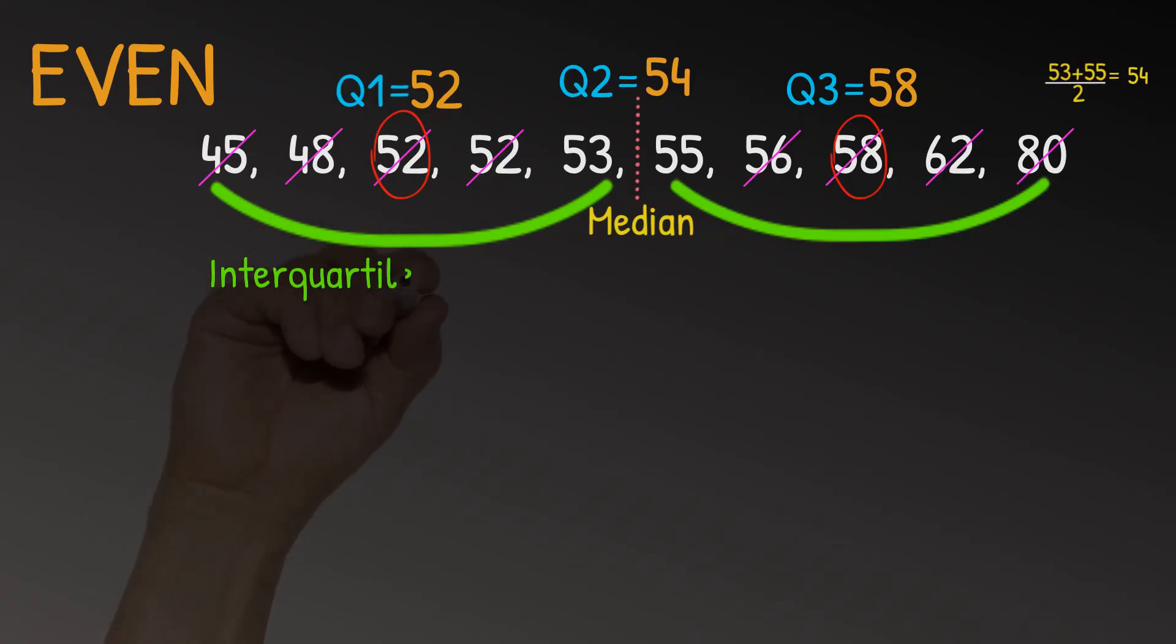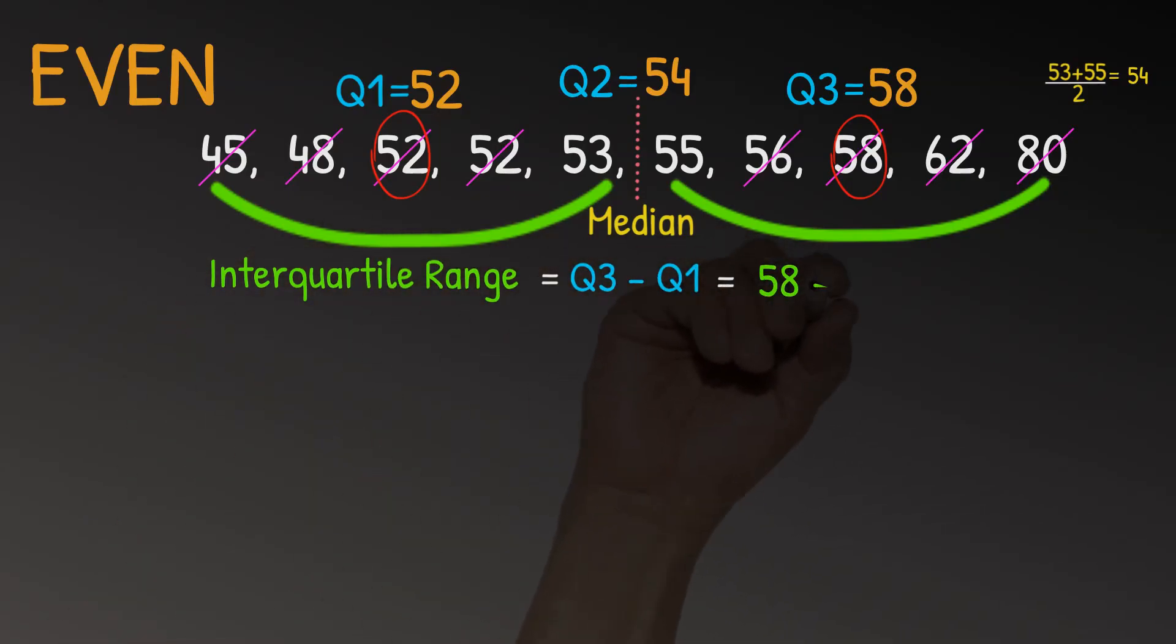So for this data set, our interquartile range, Q3 minus Q1 is equal to 58 minus 52, which is equal to 6.